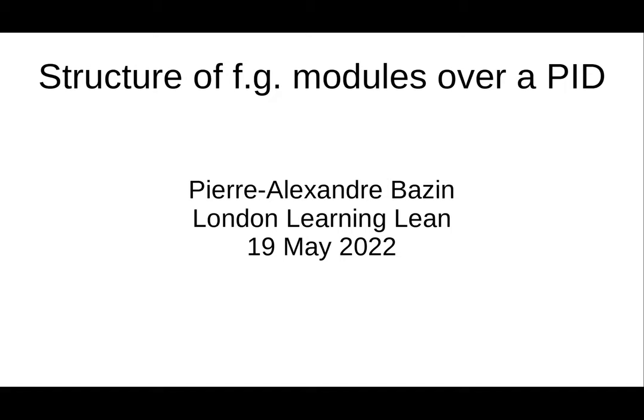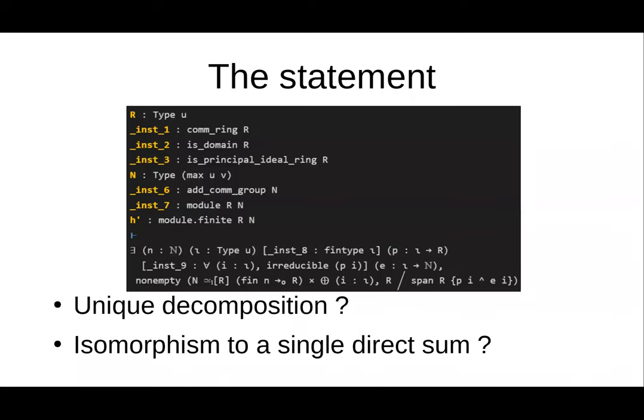So let's look at the structure theorem of finitely generated modules over a PID. First, here is a statement that I managed to prove in Lean: given a PID and a finitely generated module, the module is isomorphic to a free module direct summed with a direct sum of quotients by spans of prime powers.